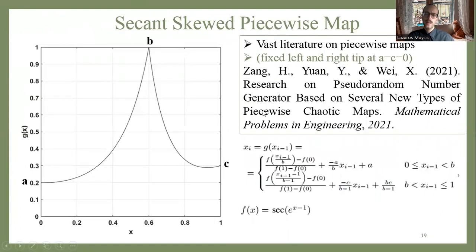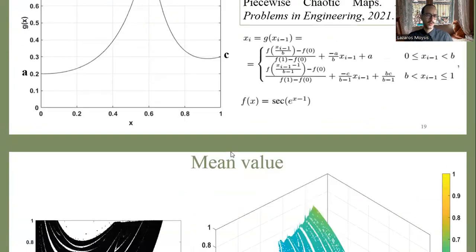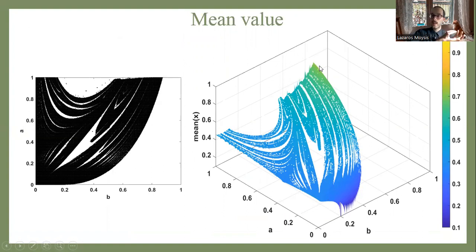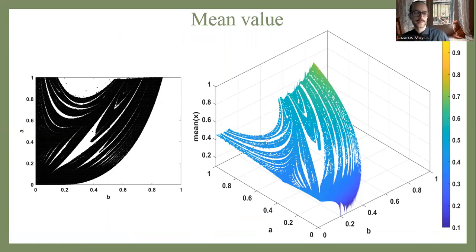Using these maps in a chaotic optimization algorithm with different parameters will yield different results, and the same holds for chaotic path planning. A second novel map was also introduced, again modified from the literature, and it similarly achieves a spectrum of possible histogram behavior — from left-skewed to uniform to right-skewed — by varying the parameters.